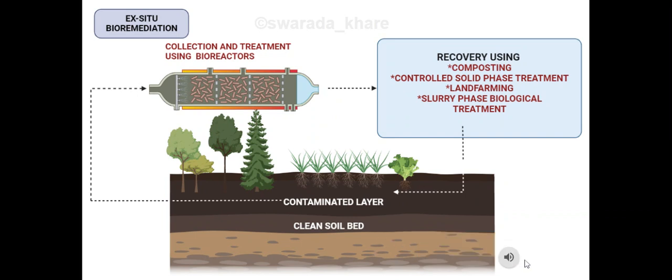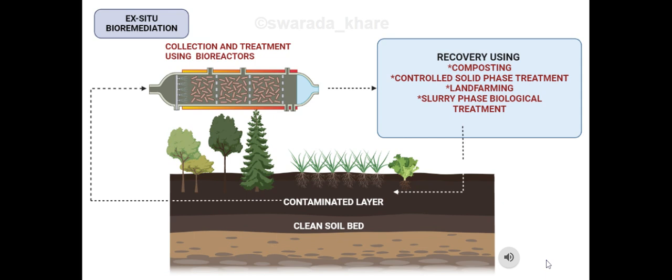Ex-situ methods involve excavation, including methods such as land farming, composting, biopiles, and use of bioreactors. There is a high risk of exposure to pollutants in a toxic-free environment due to these kinds of procedures. Making a microorganism-friendly environment in the vicinity of the contaminated site is the productive approach of bioremediation, which can be achieved by in-situ methods effectively.